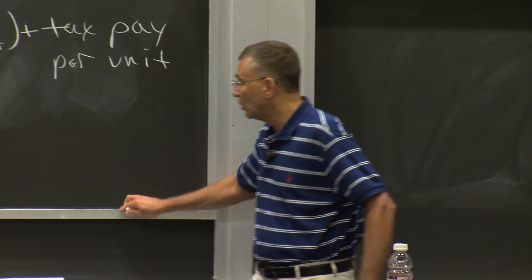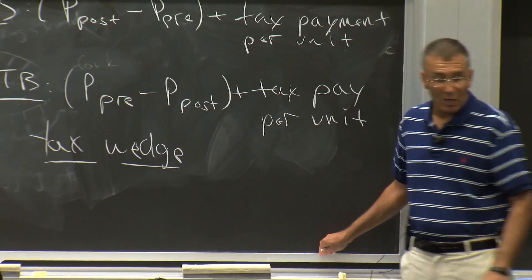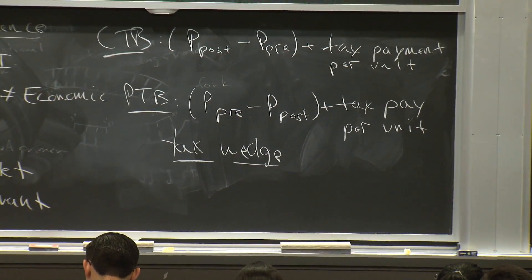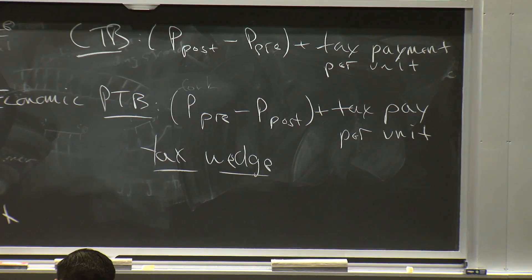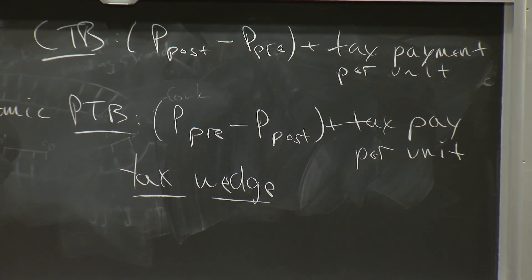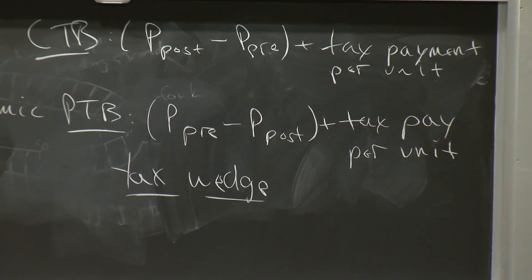What's the burden on consumers? Let's put this down here again. It's the post-tax price, which is $1.30, minus the pre-tax price, which is $1.50, so that's negative 20 cents, plus the check they send to the government, or the credit charge they get, which is 50 cents. Minus 20 plus 50 is 30 cents. Exactly the same burden as last time.